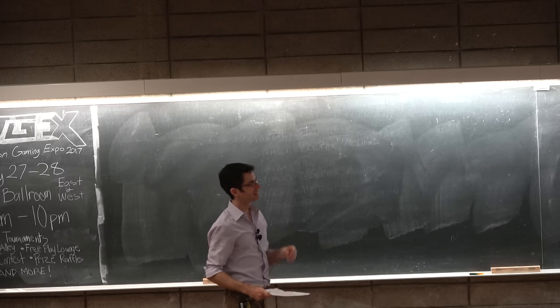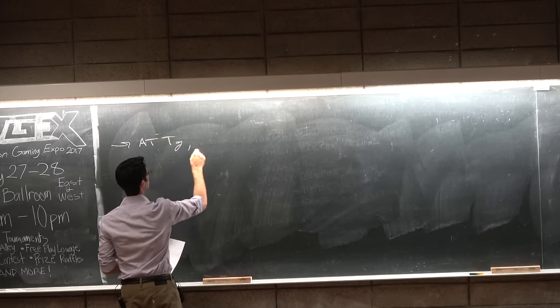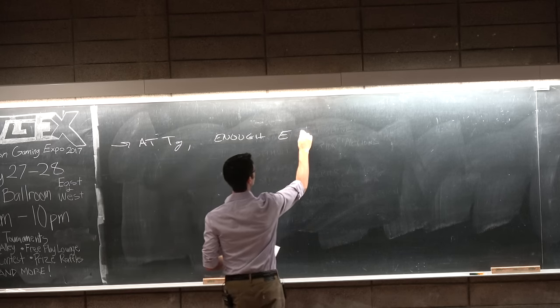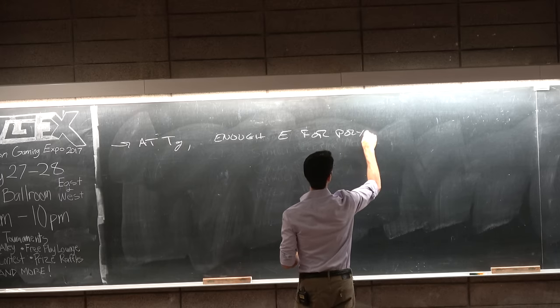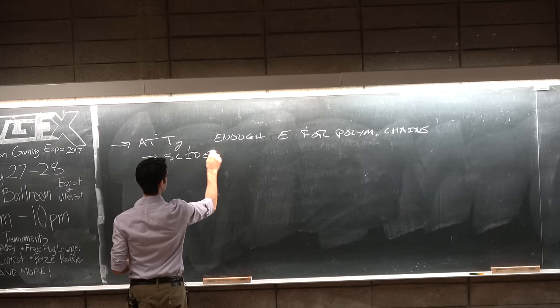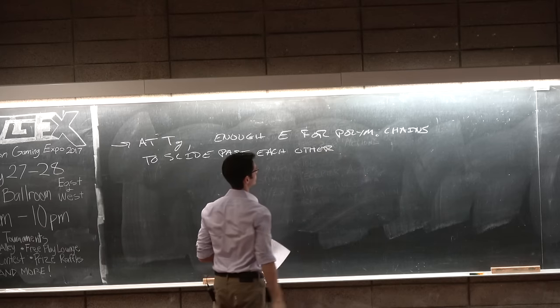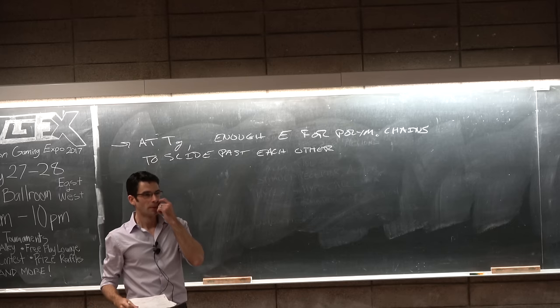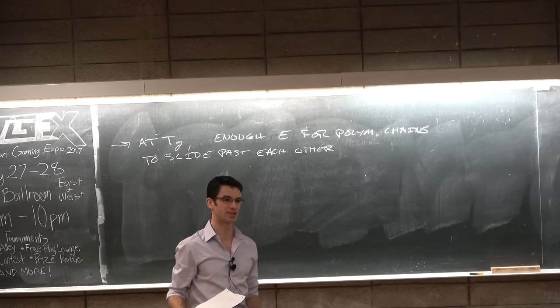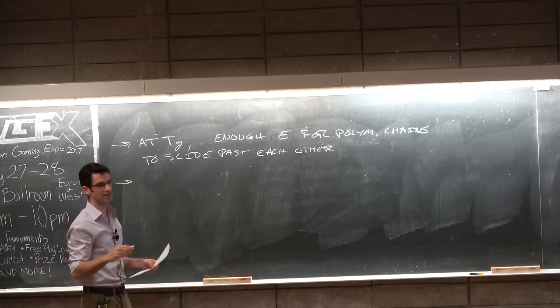Okay, now at TG, TG is when you allow, you have enough thermal energy in the system for polymer chains to slide past each other. I don't know if the definition is quite clear. Say about 50 chains to slide past each other or 50 monomers in the chain to slide past each other. Activation energy for that process occurs at around TG.